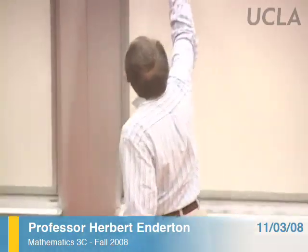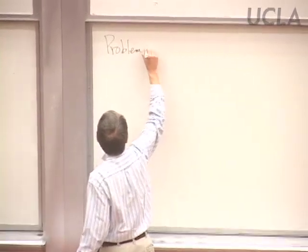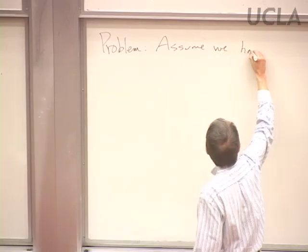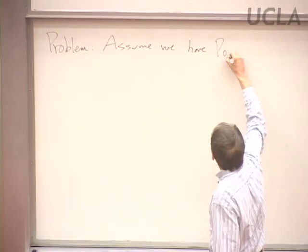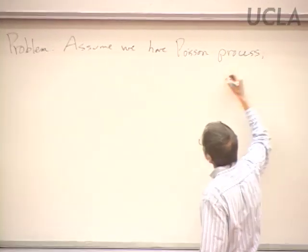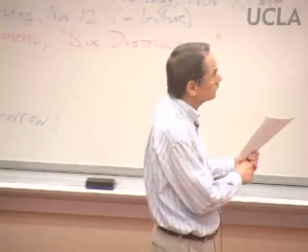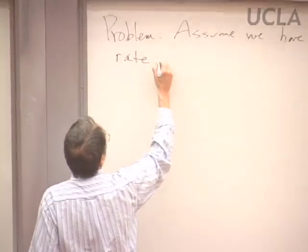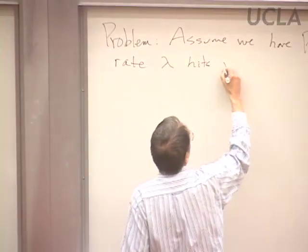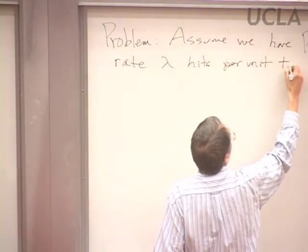Let's start by looking at the following problem concerning the Poisson distribution. Let's assume we're looking at a Poisson process. There's some long-term average rate of hits — call it lambda. We get lambda hits per unit time over a long period of time. Last week, we looked at a random variable that counted the number of hits in a certain time interval.